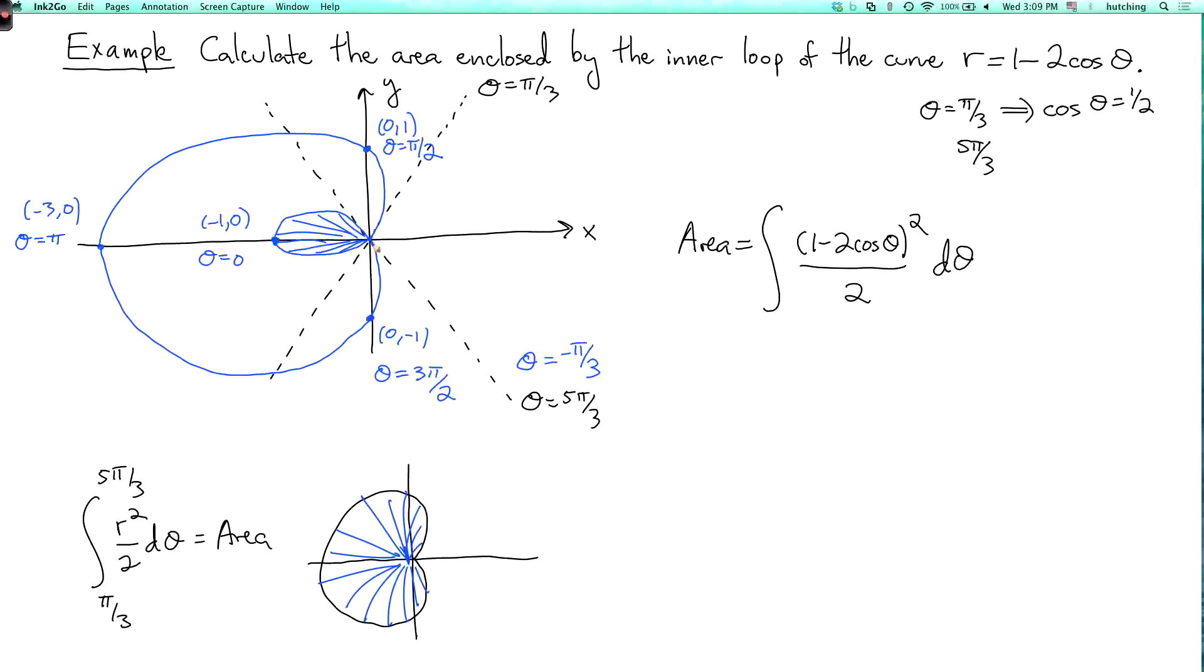So if we start at theta equals minus pi over 3 and go up to theta equals plus pi over 3, then we're going to see the inner part of the curve, which is what we want. So the correct limits are minus pi over 3 and pi over 3.